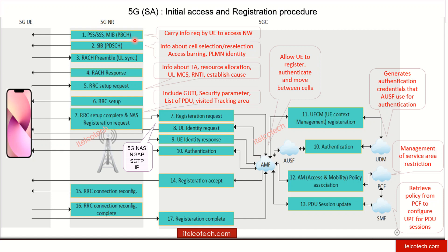Once synchronization is done, there will be a broadcast channel which is continuously traveling in the downlink from the network to the user equipment, and it carries all the information required to initially access the network. There are also System Information Blocks in the shared channels, which carry all the information related to the thresholds defined in the network so as to connect to the network initially.